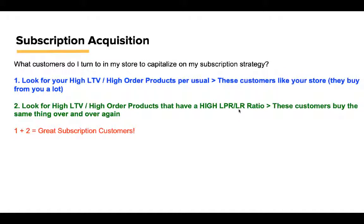What customers do I turn to in order to capitalize on my subscription strategy? I work with a company that sells supplements and vitamins. What we do is look for high LTV, high order products as usual — those customers like your store. Then we look for high LTV, high order products that also have a high LPR-to-LR ratio. That means those customers like you and they're buying the same thing over and over again. So the message is: stop coming here manually and buying the same thing — you clearly like us, so go ahead and subscribe.